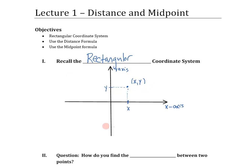One thing you'll notice about this coordinate system is that the two axes have broken up your two-dimensional plane into four quadrants. We typically refer to this one-fourth of the plane as quadrant one. This over here is quadrant two. This down here is quadrant three. And this is quadrant four.